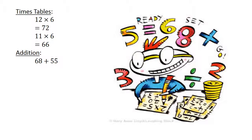68 plus 55 equals 123. Subtraction. 22 minus 58 equals negative 36. Division. 24 divided by 6 equals 4.